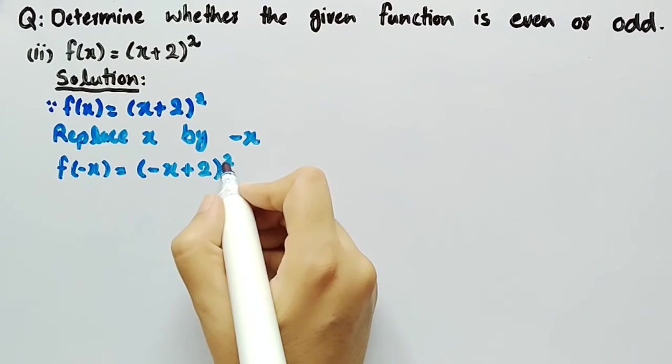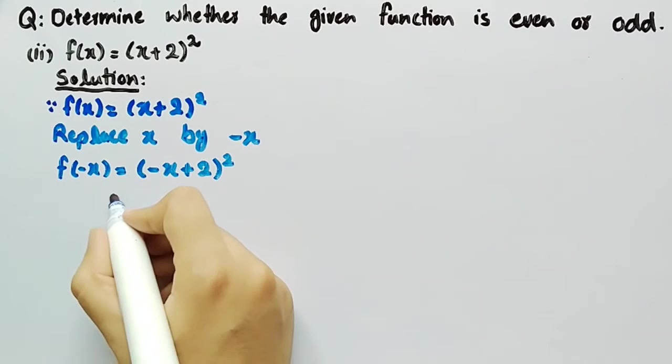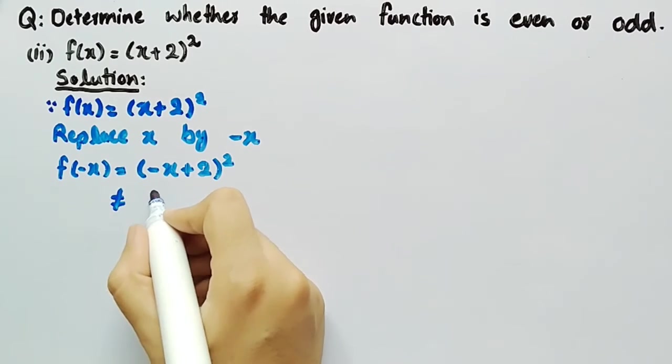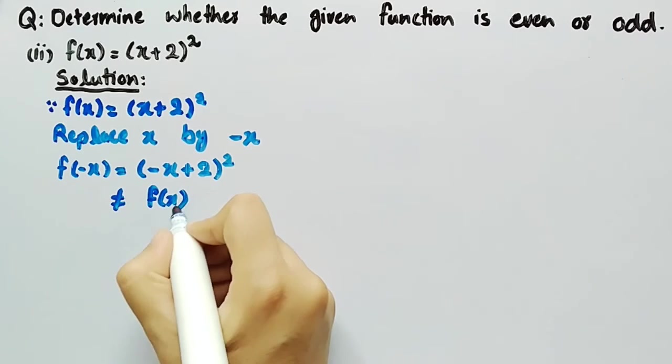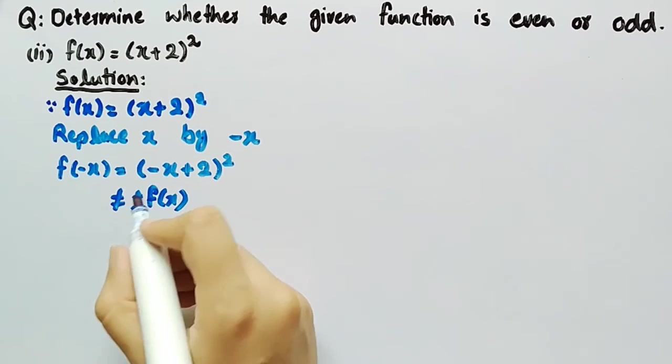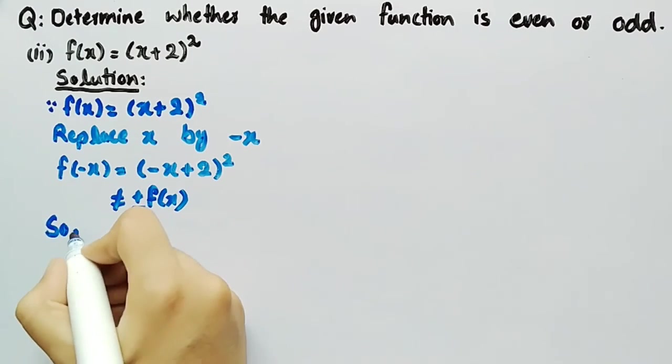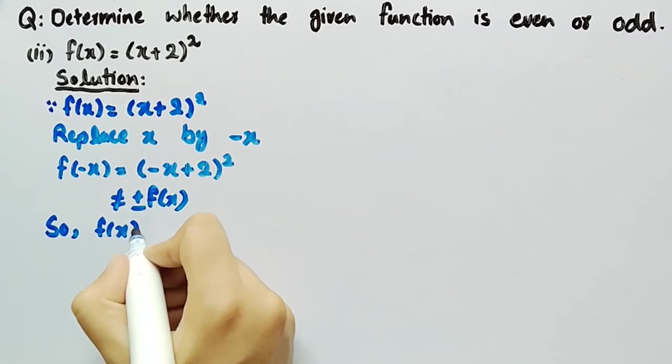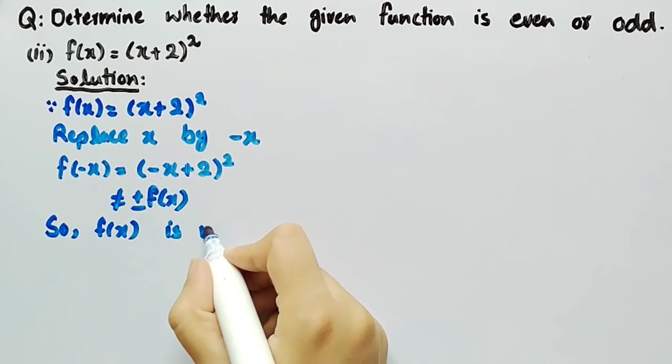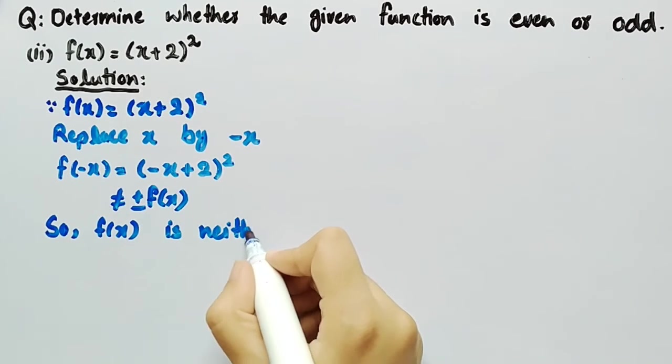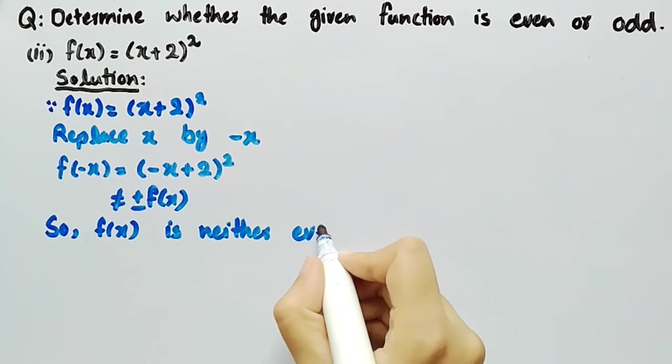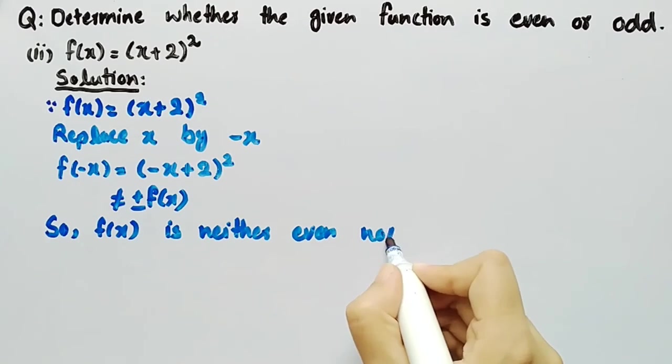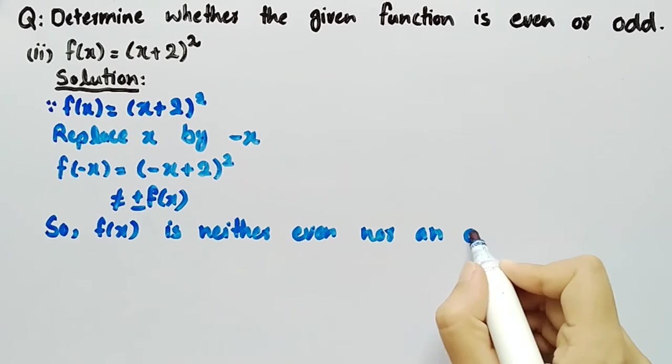We can clearly see that it is neither equal to f(x) nor -f(x), which means that f(x) is neither even nor an odd function.